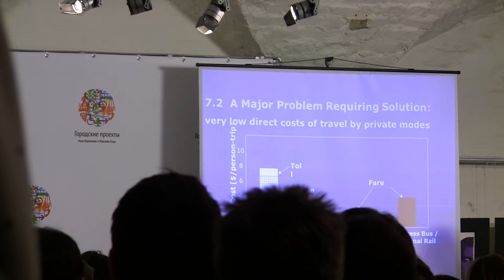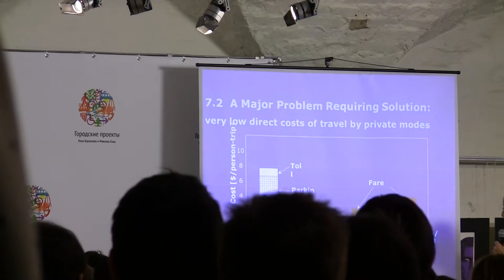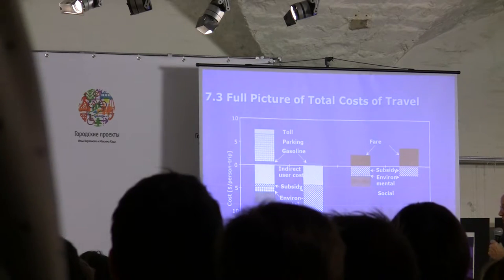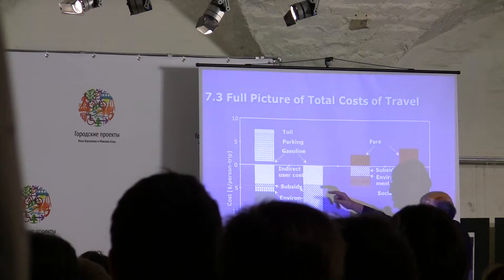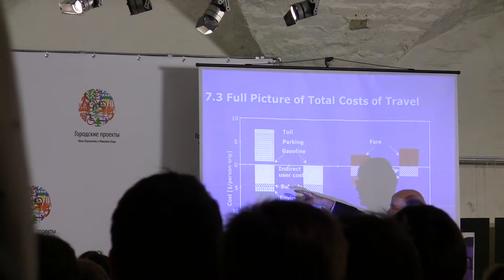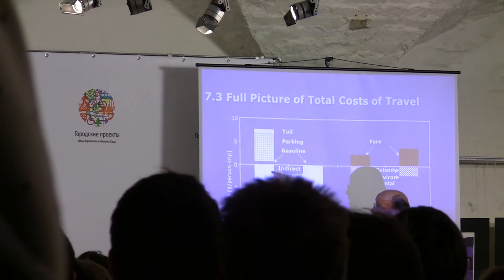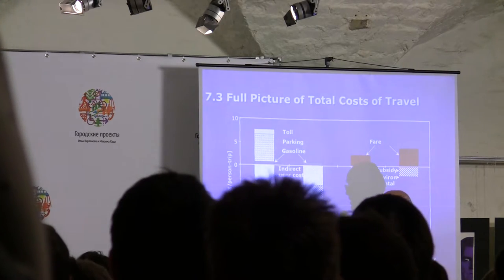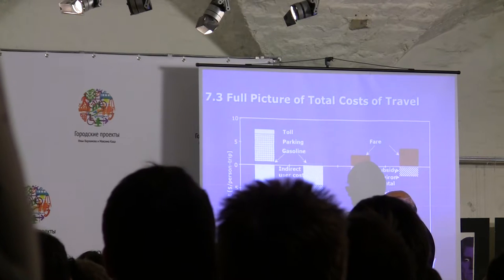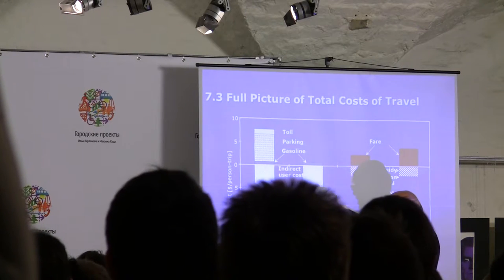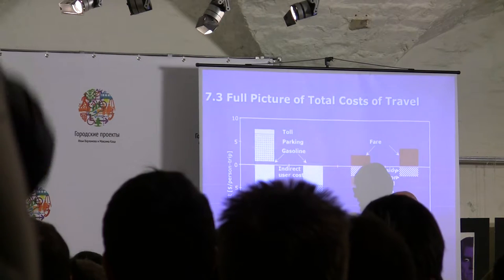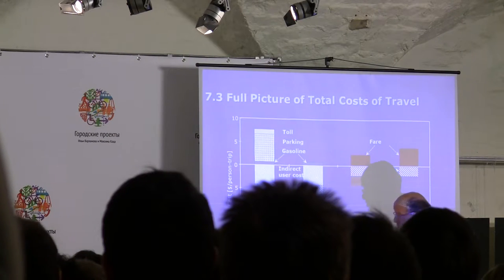The picture is not complete here. The complete picture is that we have additional costs: the car owner cost, various subsidies that are given, environmental costs, and social costs.